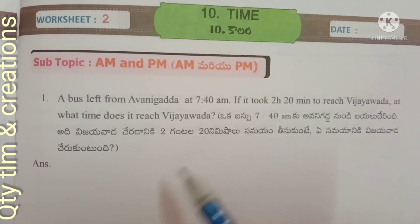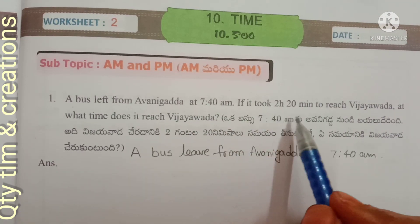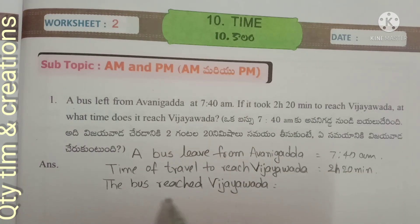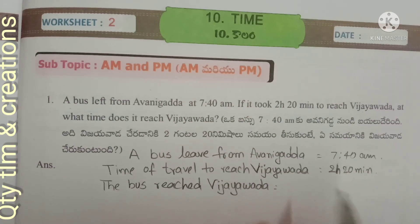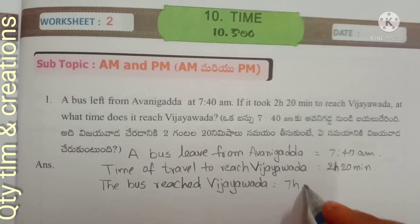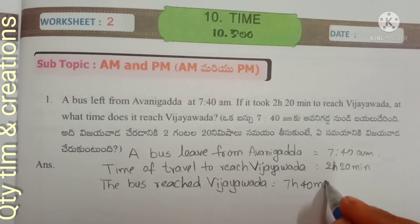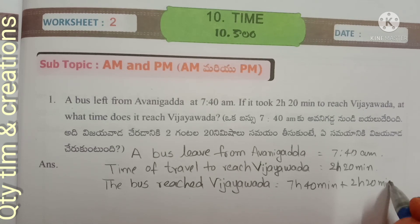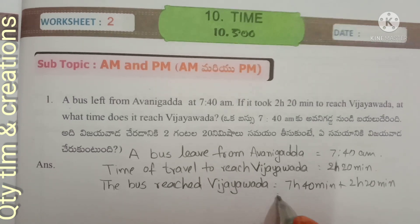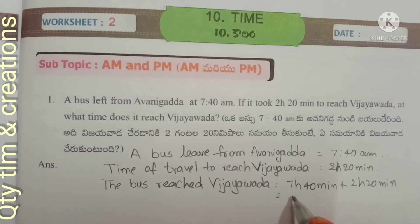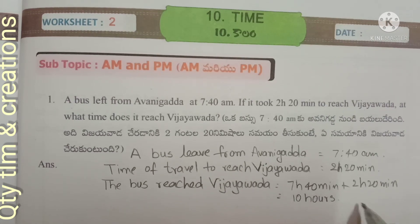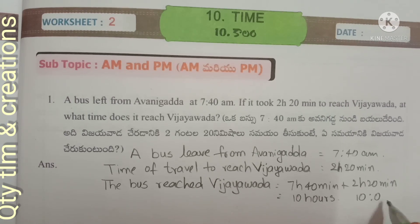Word problem: A bus leaves from Avanigadha at 7:40 AM. The travel time to reach Vijayawada is 2 hours 20 minutes. So the bus reaches Vijayawada at 7 hours 40 minutes plus 2 hours 20 minutes, which equals exactly 10 hours — that means 10 AM.